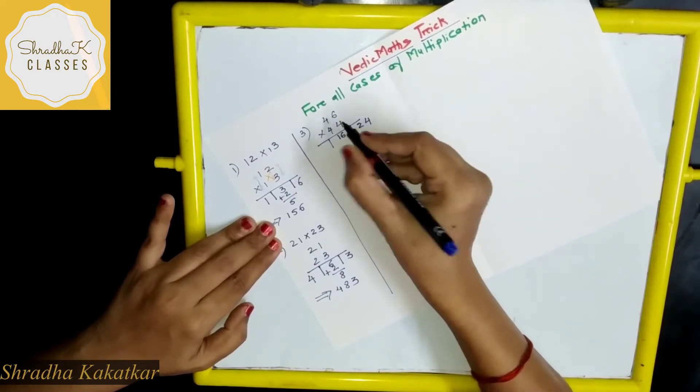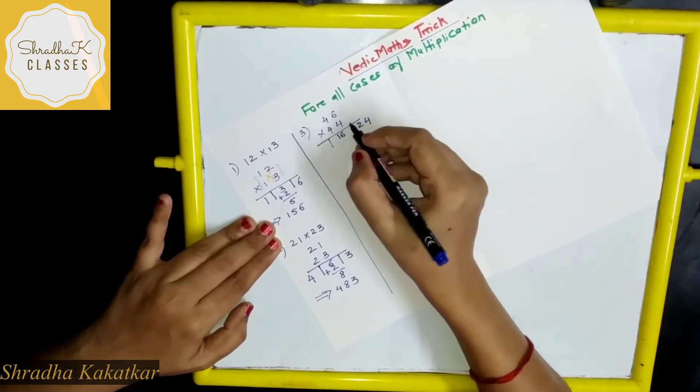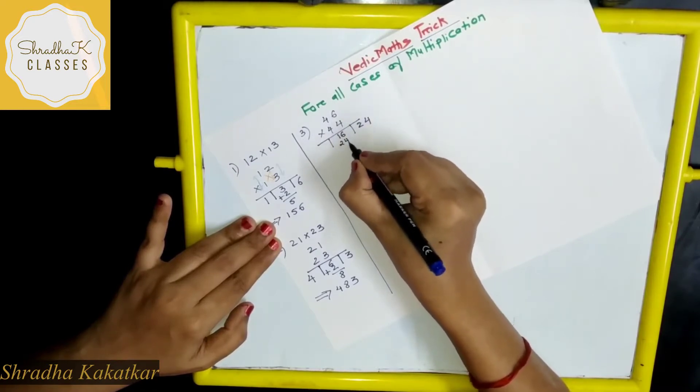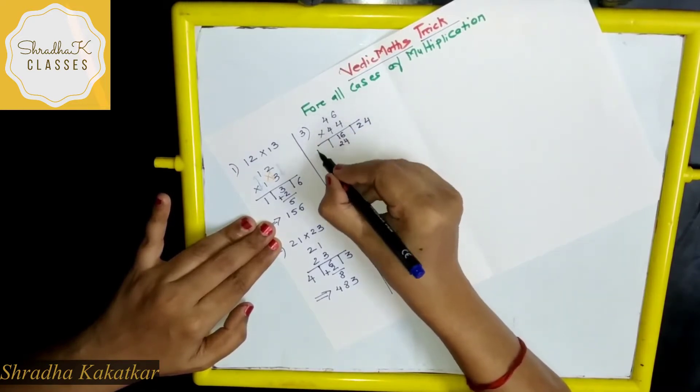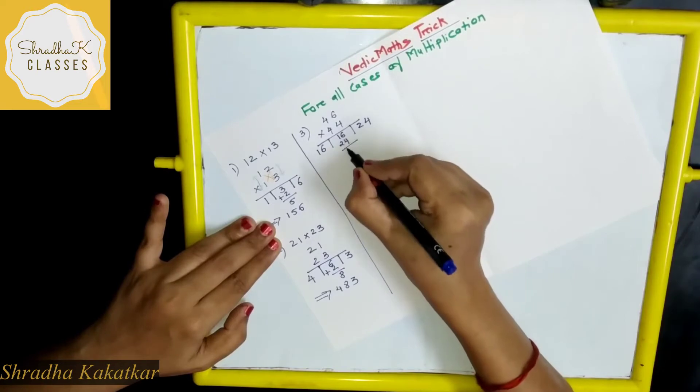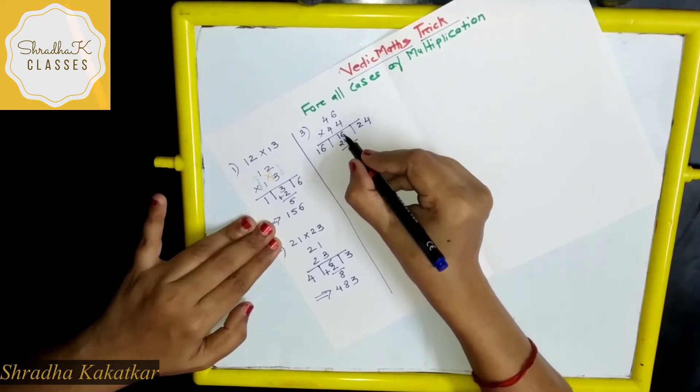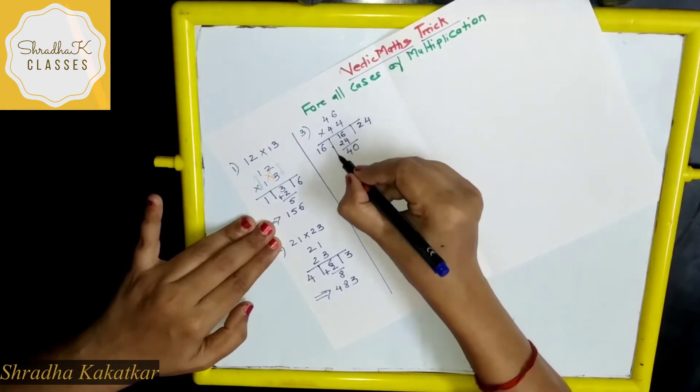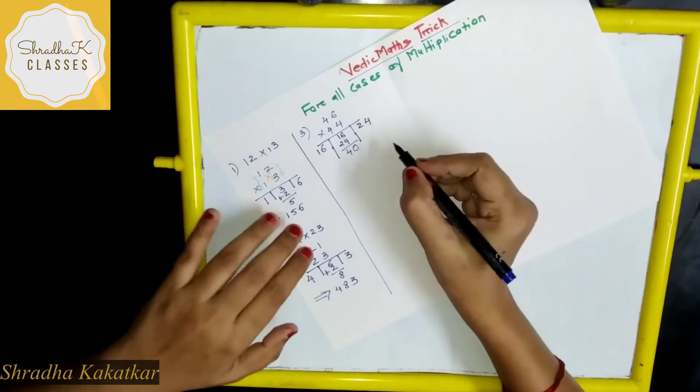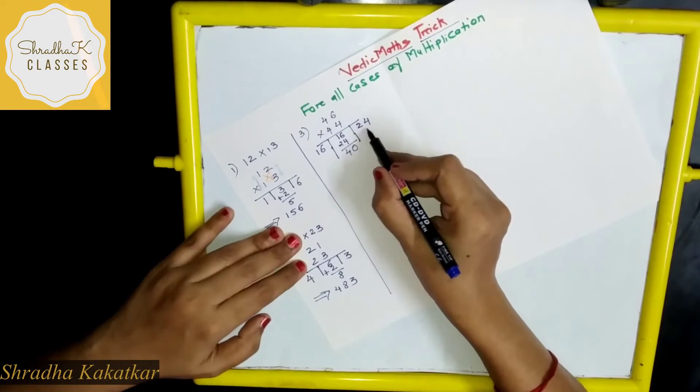Then next step is what? 4 into 4, 16. 6 into 4, 20, 4. And here 4 into 4, 16. Now this we have to add. This is what? 6 plus this will become 40. Now what is the next step? See here we have got 2 digit number at the end.